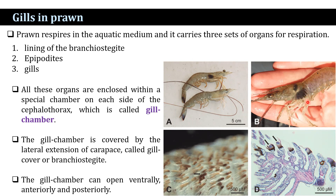The gill chamber is covered by the lateral extension of the carapace, just like fish gills are covered by a particular upper plate. In the case of prawn, the gills are also covered by an extension of the carapace, known as the gill cover or branchostegites. The gill chamber can open ventrally, anteriorly, and posteriorly.